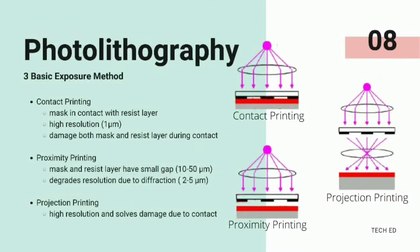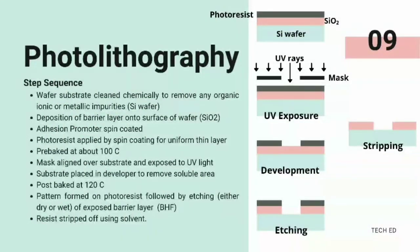Photolithography is broadly categorized according to the basic exposure method into three types: contact printing, proximity printing, and projection printing. Contact printing has high resolution but damages both the mask and resist layer as they are in contact. Proximity printing was adopted to eliminate the damage done due to contact between mask and resist layer, but resulted in lower resolution due to diffraction. Projection printing evolved to accomplish high resolution and eliminate damage due to contact between mask and resist layer.